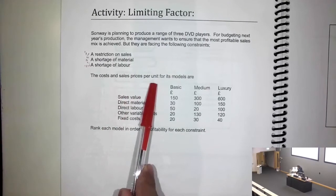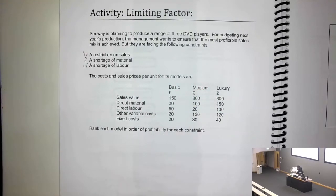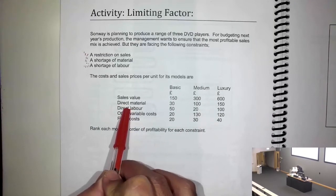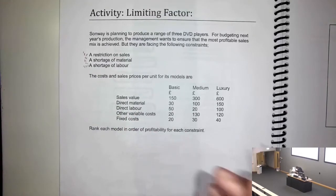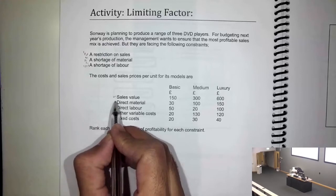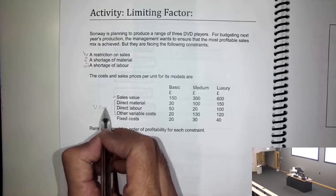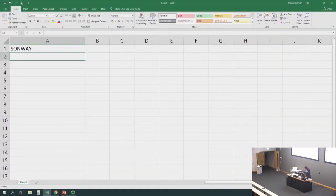The cost and the sales price per unit for its models are basic, medium, and luxury. The selling price is given. Two basic pieces of information we need in this question: one is sales price which is given clearly, and then our variable costs — direct material, direct labor, other variable costs. We will ignore fixed costs in this question. First, a restriction on sales.